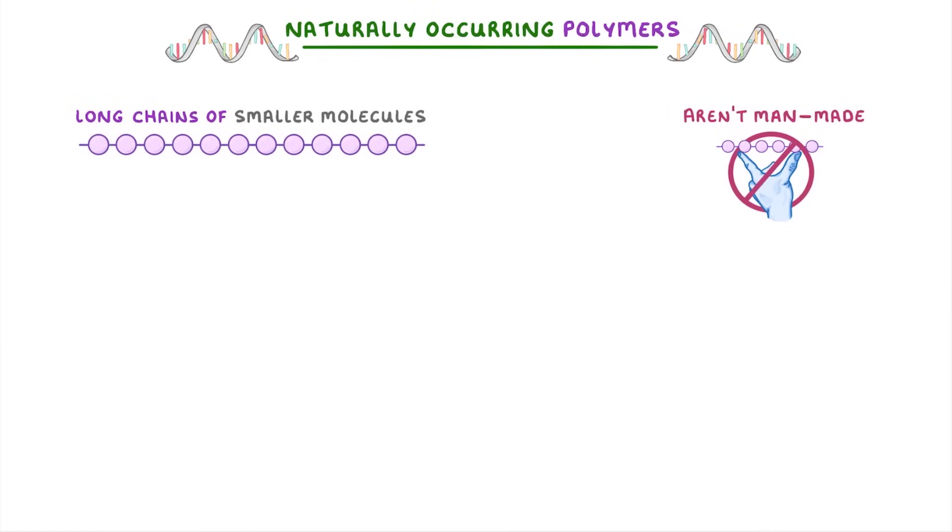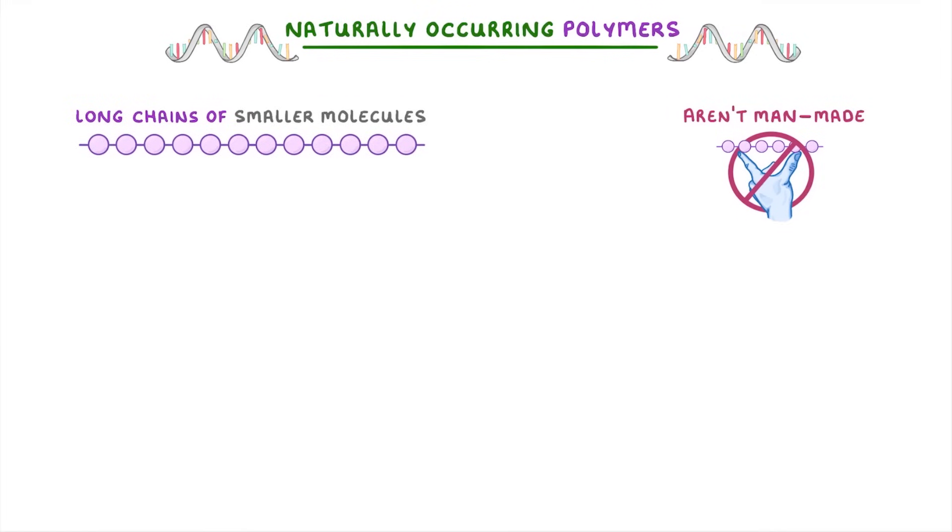To recap, polymers are just long chains of smaller molecules called monomers.